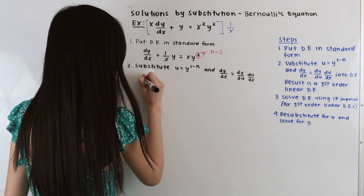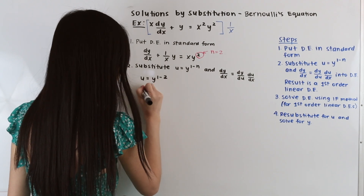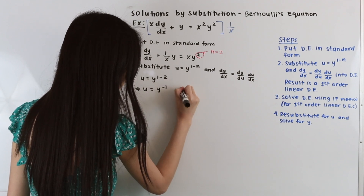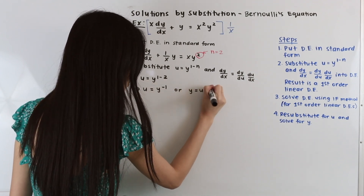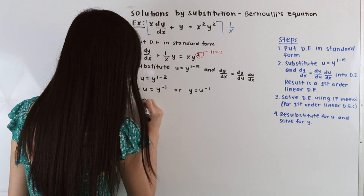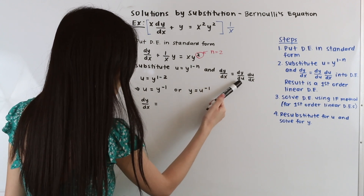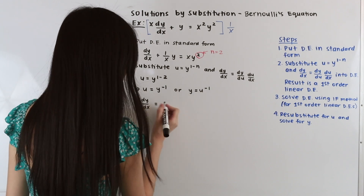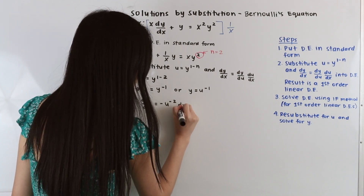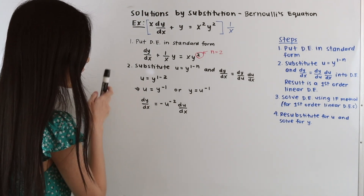So we have u = y^(1−n) with n = 2, which gives u = y^(−1), or equivalently y = u^(−1). Now let's find dy/dx: it equals (dy/du)(du/dx). Since y = u^(−1), the derivative with respect to u is −u^(−2). So dy/dx = −u^(−2) du/dx.